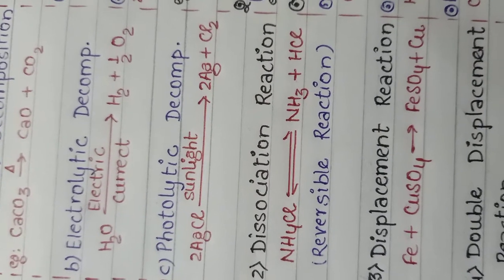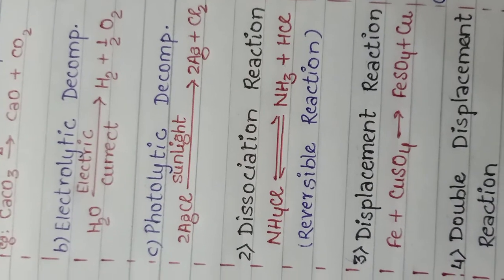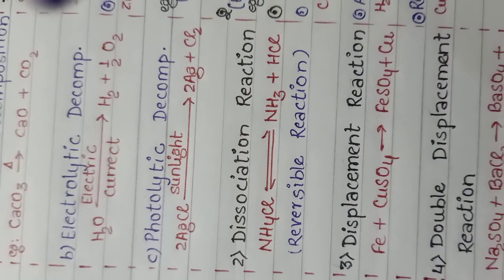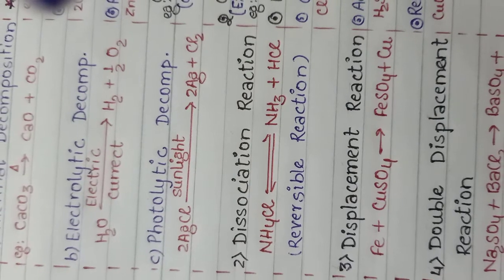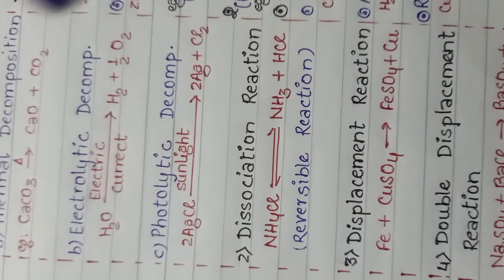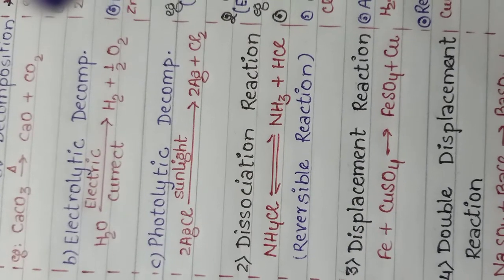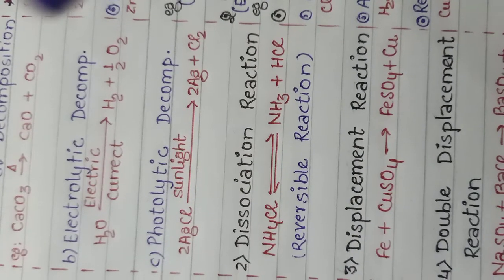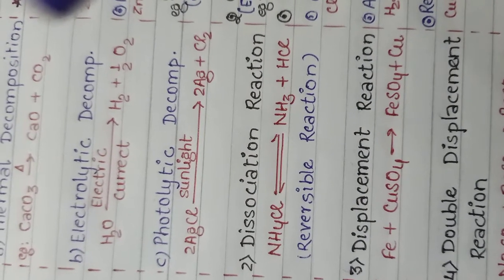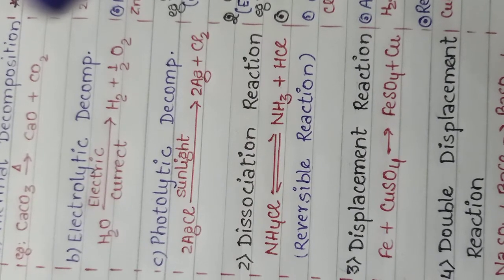Next, dissociation reaction. When a single substance dissociates to form two or more substances, it is called dissociation reaction. For example, ammonium chloride dissociates to form ammonia and hydrochloric acid. It is a type of irreversible reaction.